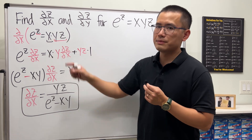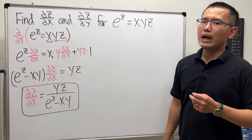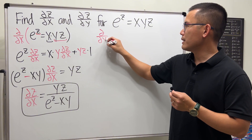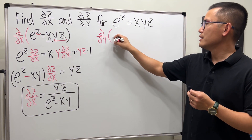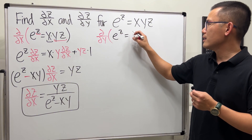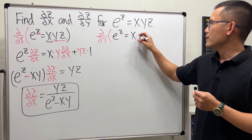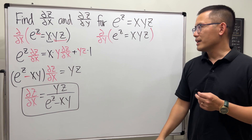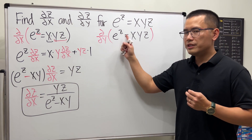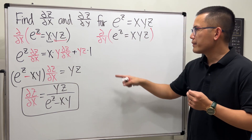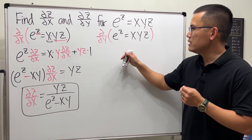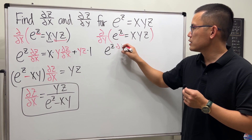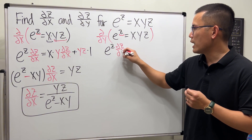The partial with respect to y of this thing is pretty much the same. We have e to the z plus xyz. We are treating z as a function of y, so the derivative of e to the z is e to the z, and we use the chain rule, so we get partial z with respect to y.